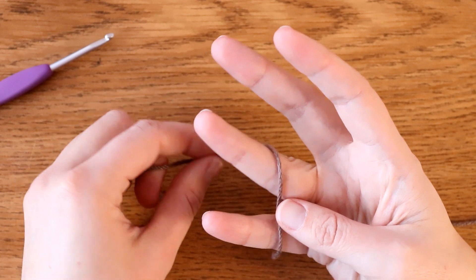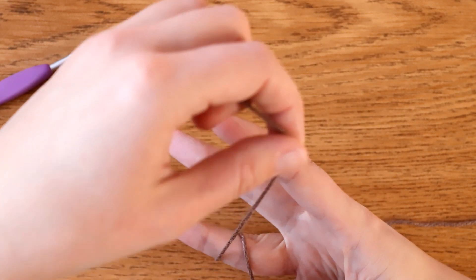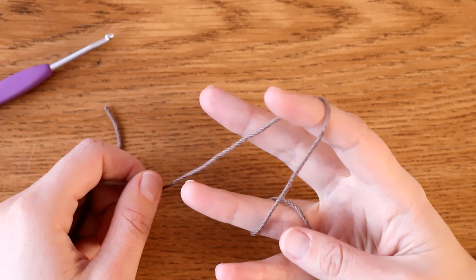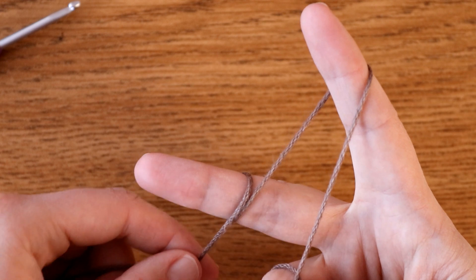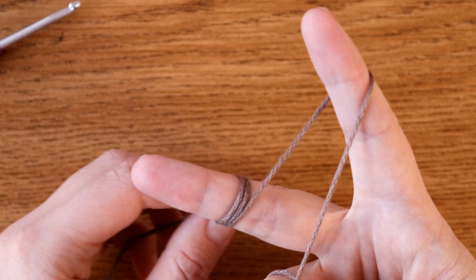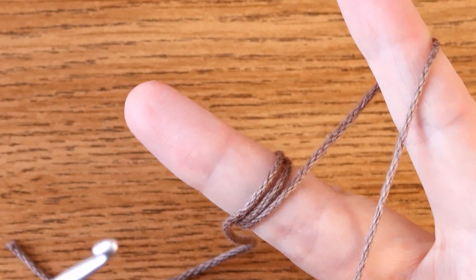For me, I like to wrap the yarn around my ring finger, go up over my index finger, and then wrap the yarn a couple of times around my middle finger so I've got a couple of loops on there. It's around these little loops that we're going to create our magic circle.